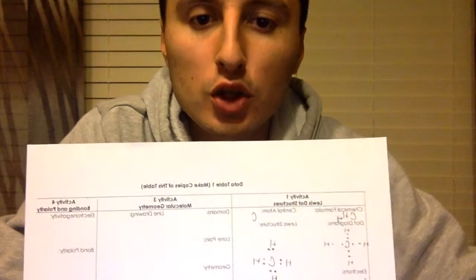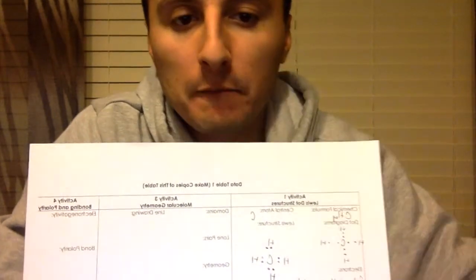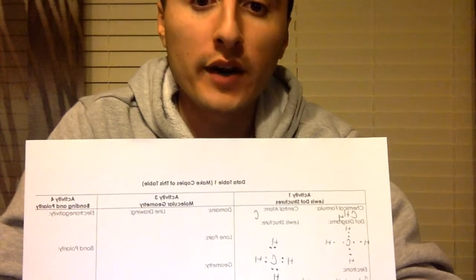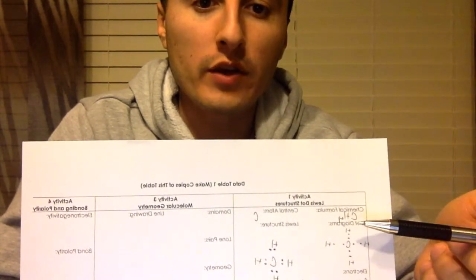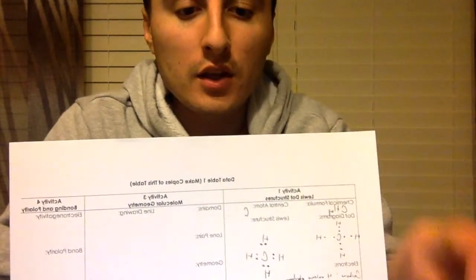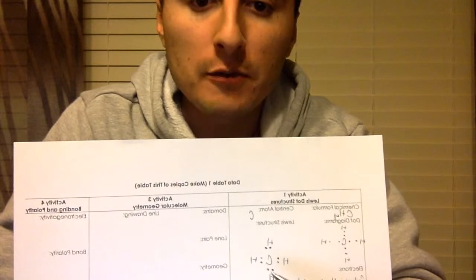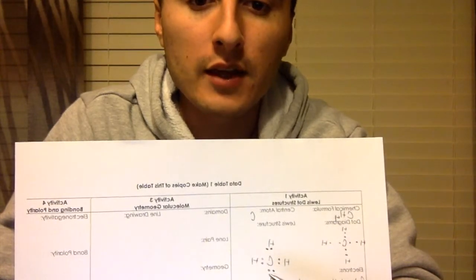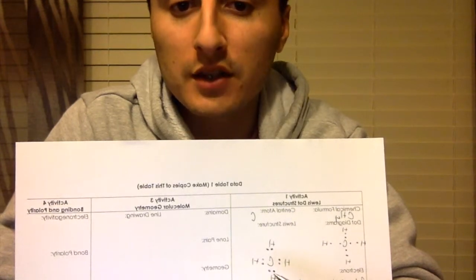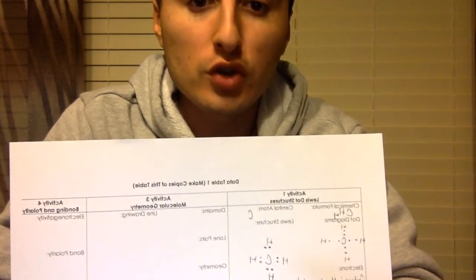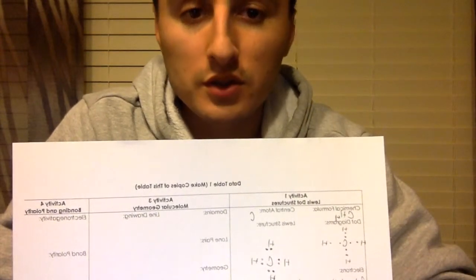Here we have our Lewis structure and dot diagram. Carbon has four valence electrons and hydrogen has only one. In our chemical formula CH4, we have one carbon atom and four hydrogen atoms, giving a total of eight valence electrons. Carbon is the central atom surrounded by four hydrogen atoms. Here I've created the pairs of valence electrons which are our bonds — this is our Lewis structure for methane, CH4.